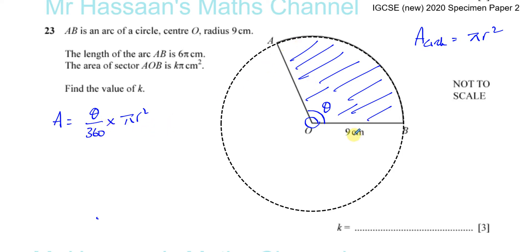I know r is 9, but I don't know what θ is. There are two unknowns here, so I can't solve this yet. However, they gave us another piece of information: the length of the arc from A to B is 6π centimeters. Maybe I could use that.